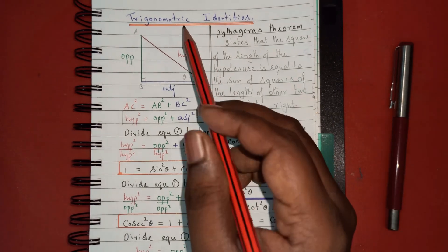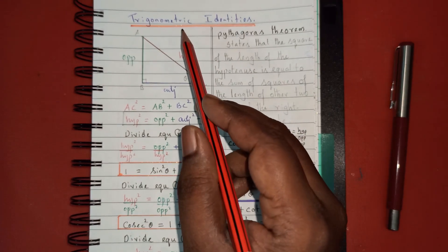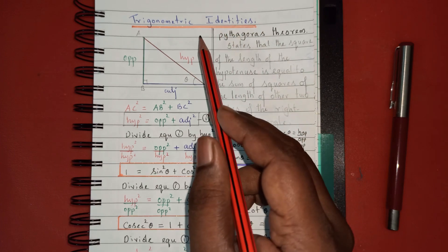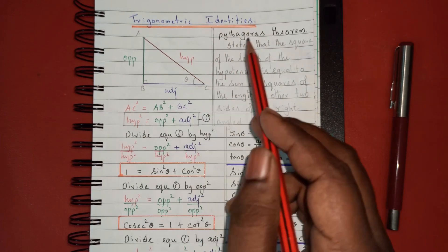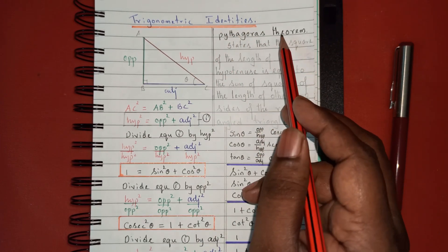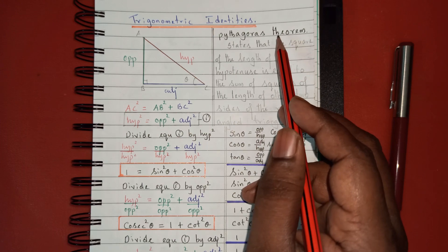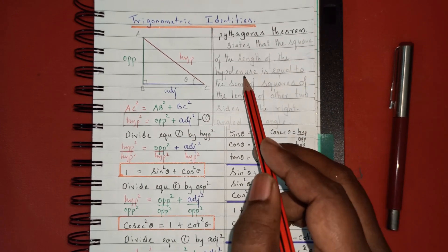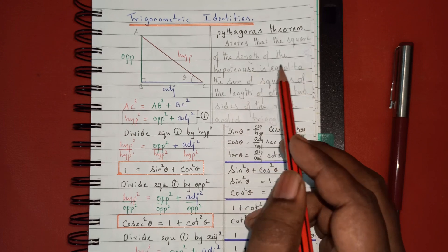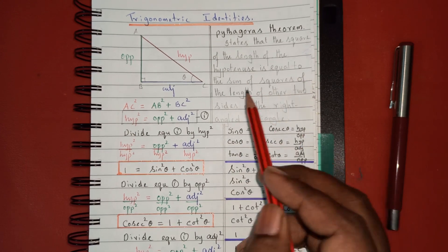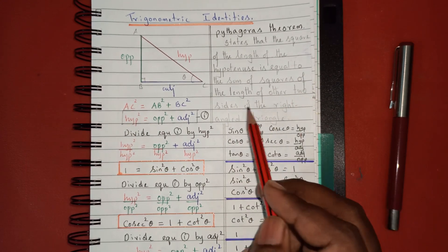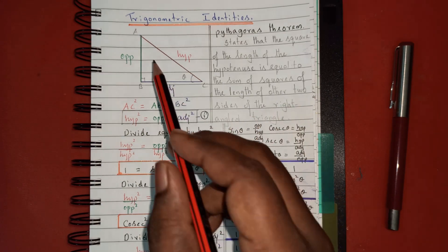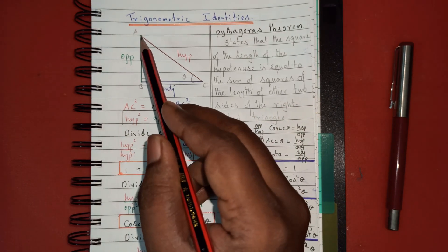Hello students, this video is about trigonometric identities. We are going to derive all the identities using a right-angled triangle and Pythagoras theorem. Pythagoras theorem states that the square of the length of the hypotenuse is equal to the sum of the squares of the lengths of the other two sides. Suppose I take a triangle ABC.